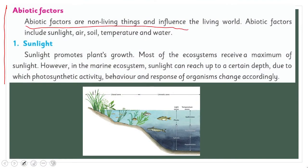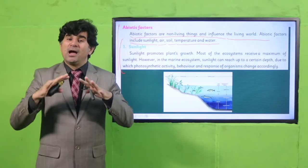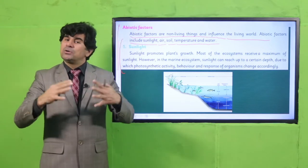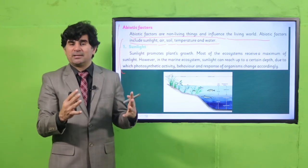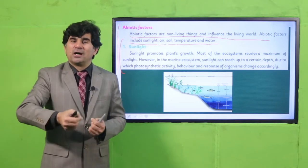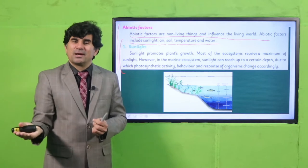Abiotic factors are non-living and influence the living world. Abiotic factors include sunlight, air, soil, temperature, and water. Sunlight is the most important thing. Sunlight gives us life. With the help of sunlight, plants prepare their own food — because they are called autotrophs. Those who are consumers come second and eat the plants, then secondary consumers, then tertiary consumers, and then decomposers.